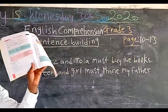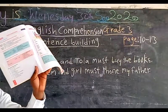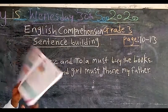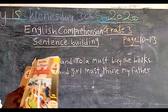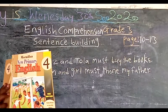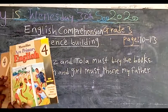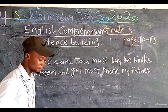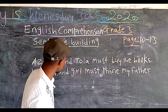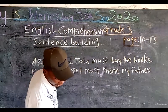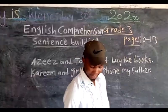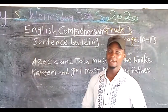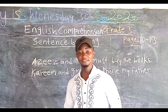We have to stop at page 13. Now this is the book. Let us look at sentence building. Under sentence building here, we say expressing obligation.